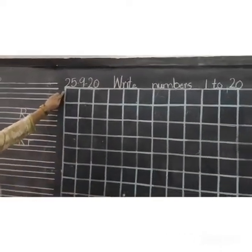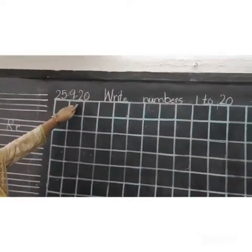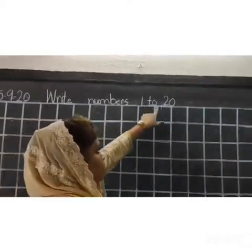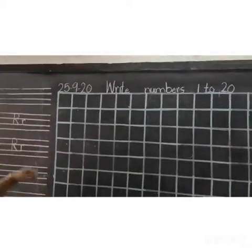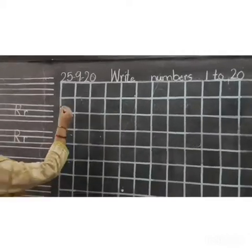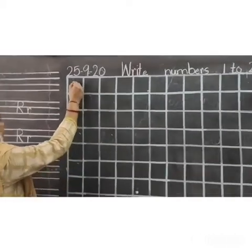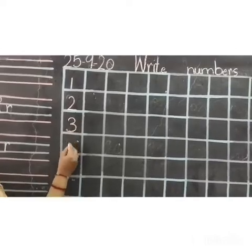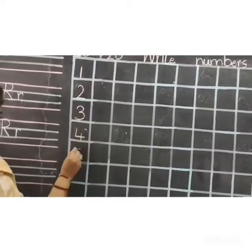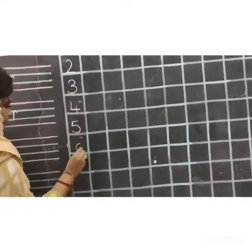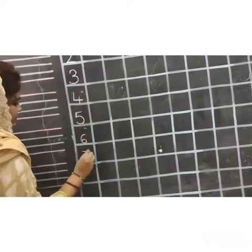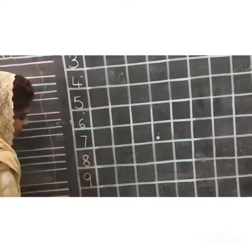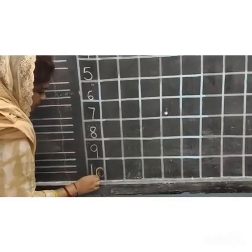Write the date 25-9-20. Write numbers 1 to 20. So let's start: 1, 2, 3, 4, 5, 6, 7, 8, 9, 10.